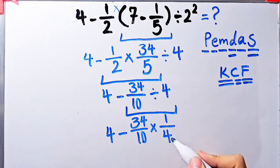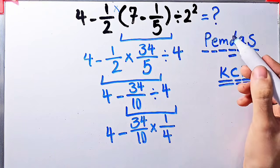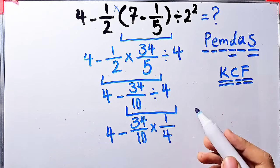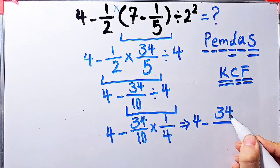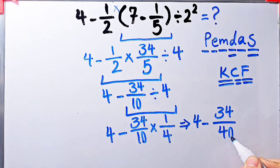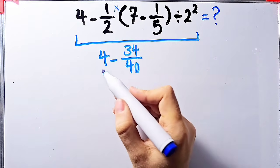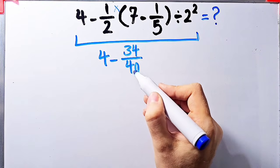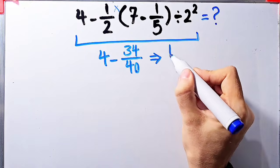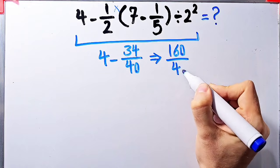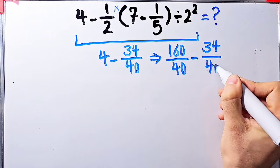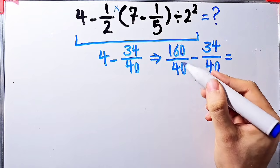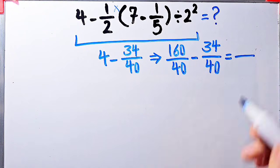In this step, we have subtraction and multiplication. First, we simplify this multiplication because multiplication has higher priority than subtraction. 34 over 10 times 1 over 4 equals 34 over 40. Now we have 4 minus 34 over 40. Since the denominator of this fraction is 40, we can write 4 as 160 over 40. Now the question is 160 over 40 minus 34 over 40, which equals 126 over 40.